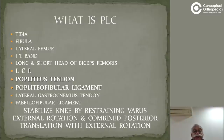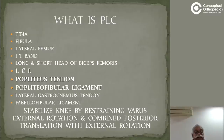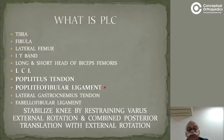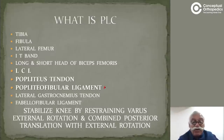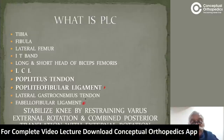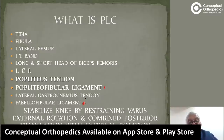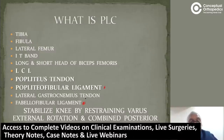Other structures include the lateral gastrocnemius tendon, the popliteofibular ligament, and the fabellofibular ligament. These are all reinforcement ligament stabilizers of the posterolateral corner. The fabellofibular ligament is not commonly discussed in undergraduate or even post-graduation studies, but it is an important part of the posterolateral corner of the knee.